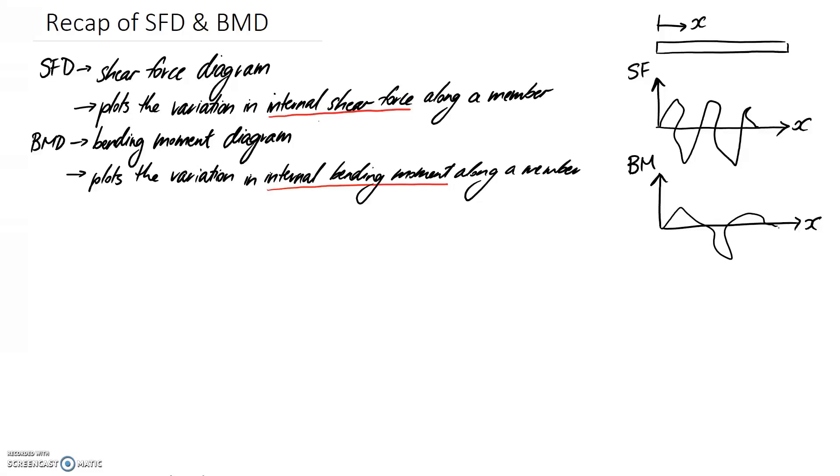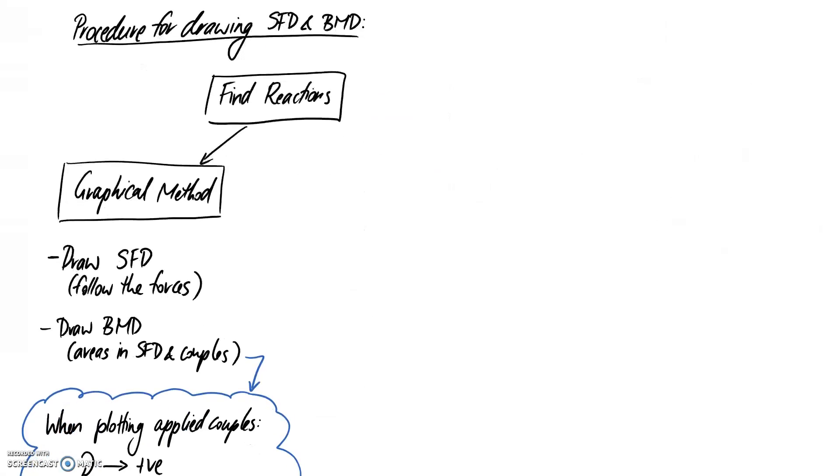I'll move on to the procedure that we can use to actually draw these. The first thing that you always want to do is calculate what the reactions are. This is just using your equilibrium equations to determine what the reactions are at the pin, the roller, the fixed joint, etc.